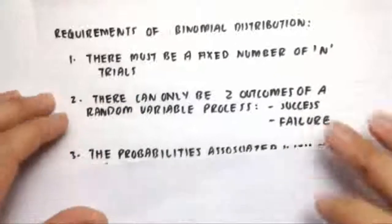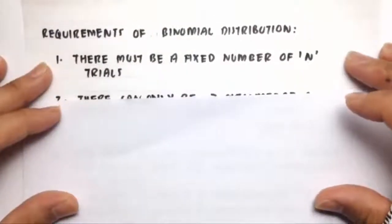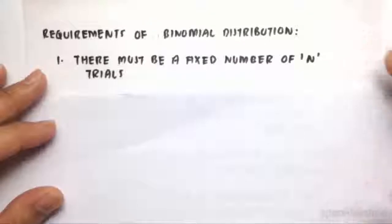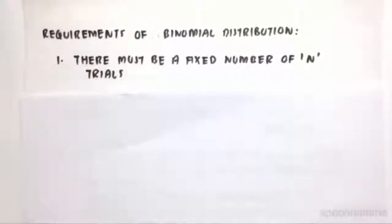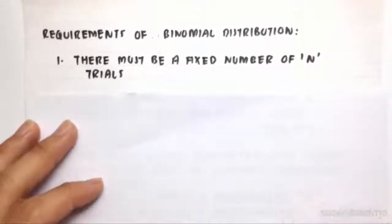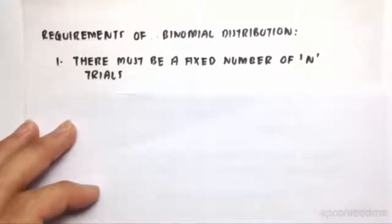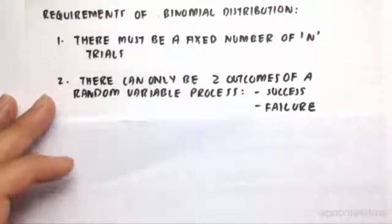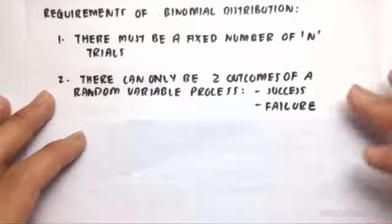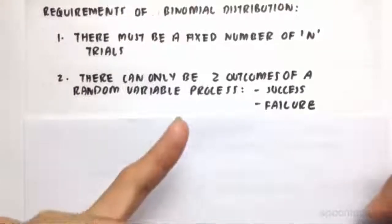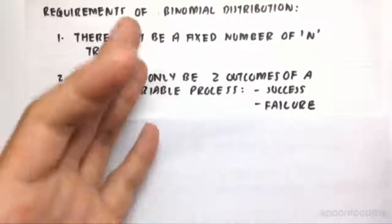Now, the requirements for binomial distribution - there are four. First, there must be a fixed number of n trials. In binomial distribution, we'll keep rolling for a 6, n number of times, and that number must always be fixed. Second, there can only be two outcomes: you can either have a success or a failure, nothing in between.